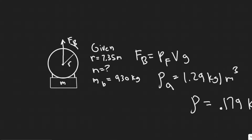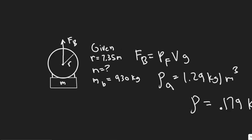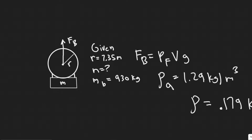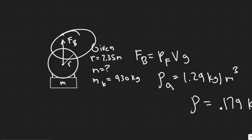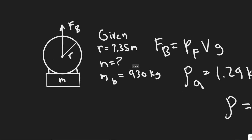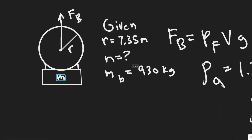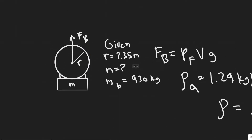As always, you want to draw what's going on. We have this spherical balloon with a radius of 7.35 meters, and we know it's going to be carrying this cargo with some mass m. We know this thing is going to be filled with helium, and it's going to rise as a result of the buoyancy force. We're trying to find the maximum value of m — the greatest mass that this cargo can have and still be able to rise.